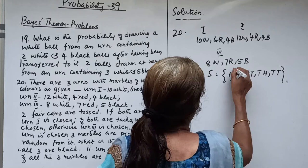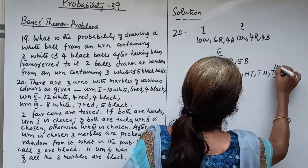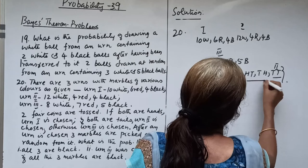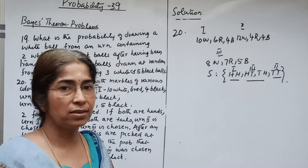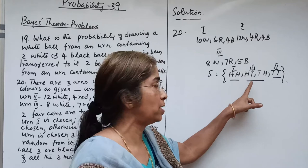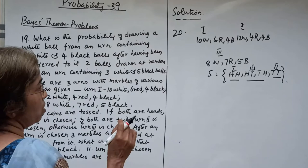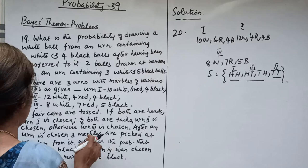So P(A1) — urn 1 chosen when both heads — is 1 by 4. P(A2) — urn 2 chosen when both tails — is 1 by 4. P(A3) — urn 3 chosen when HT or TH — is 2 by 4. After an urn is chosen, 3 marbles are picked at random from it. We want to find the probability that all 3 are black.